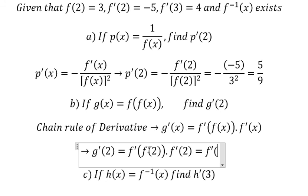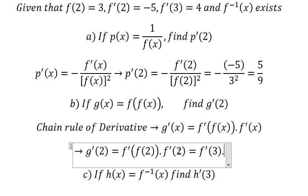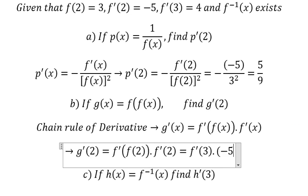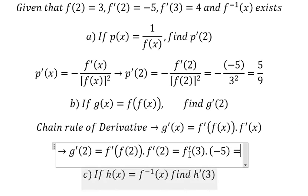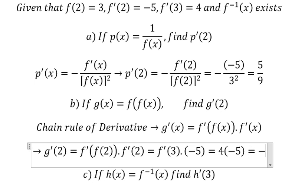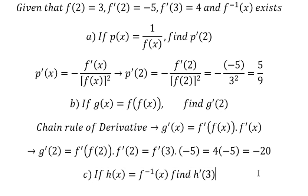f of 2 is about 3. The first derivative of the function at s equals 2 is equal to negative 5. This one is about 4. So you get about negative 20, and this is the final answer.